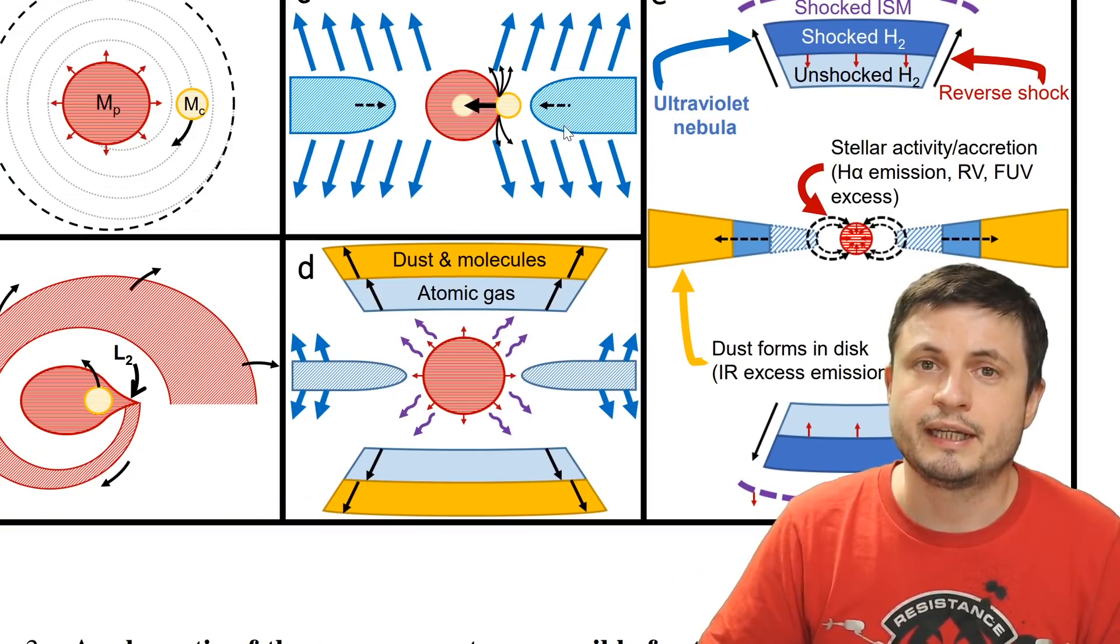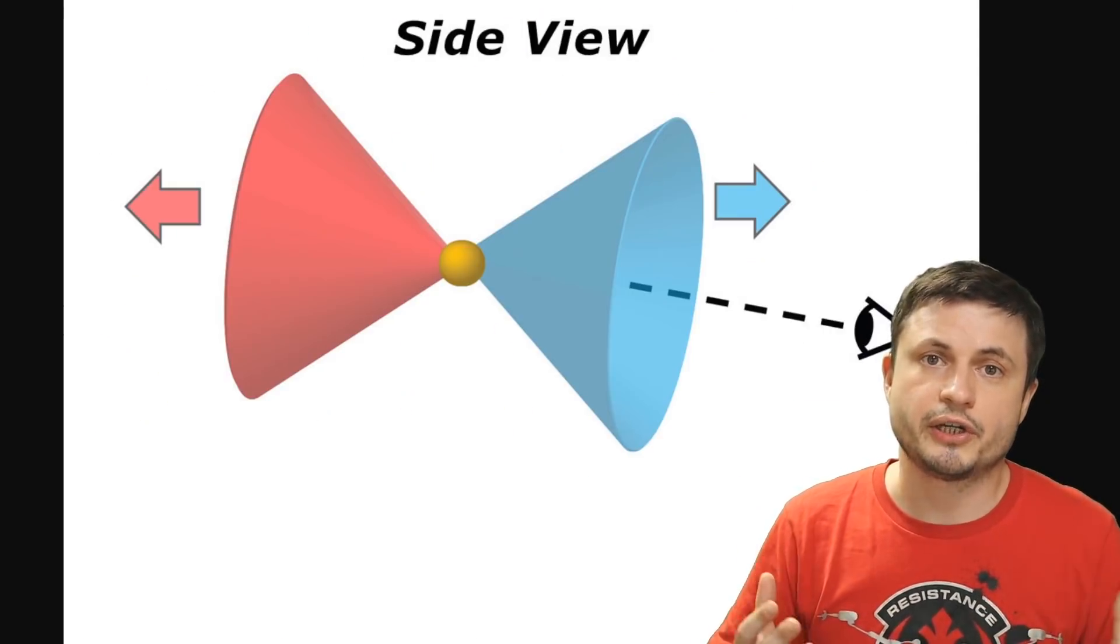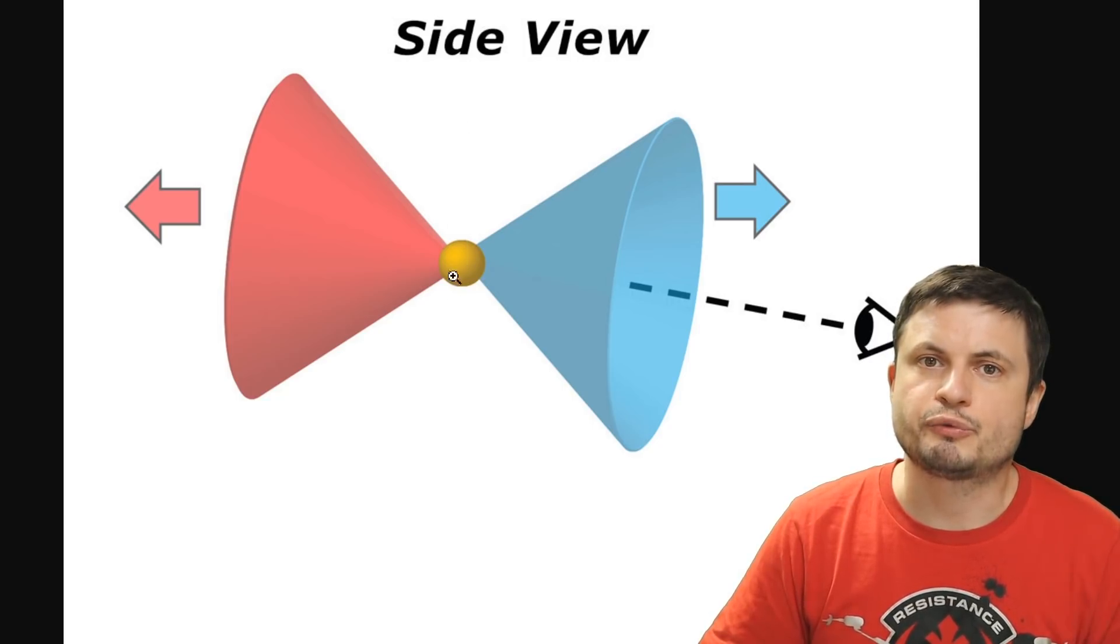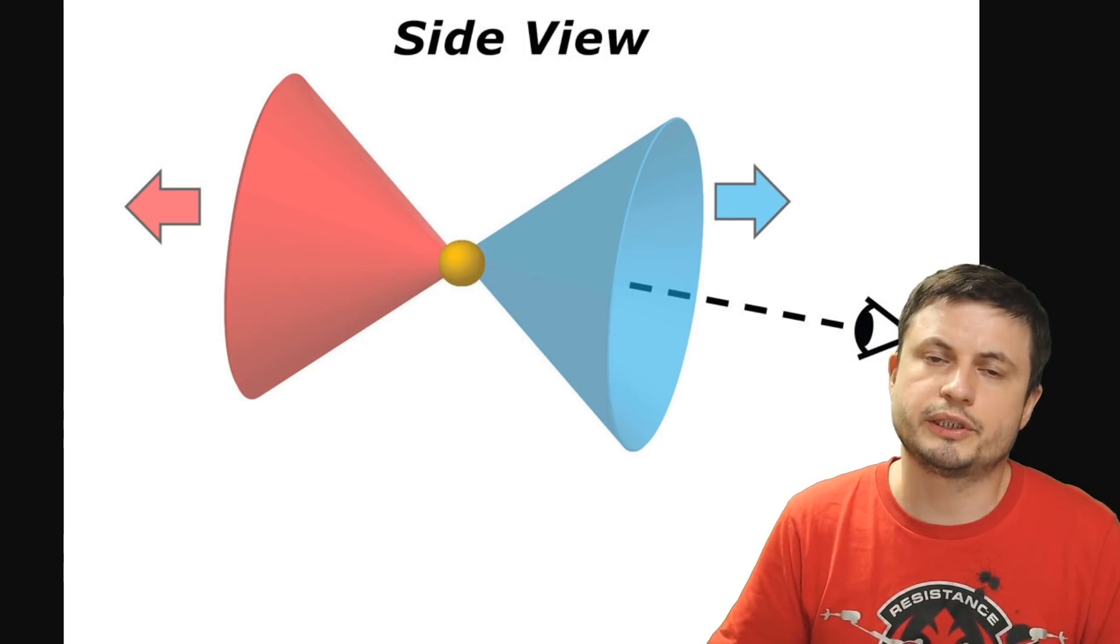And so this ring on the side essentially caused a lot of the material instead of creating a kind of a spherical shape create two different cones because right here that's where you can find this unusual ring formation. And it kind of blocked a lot of the material from leaving.